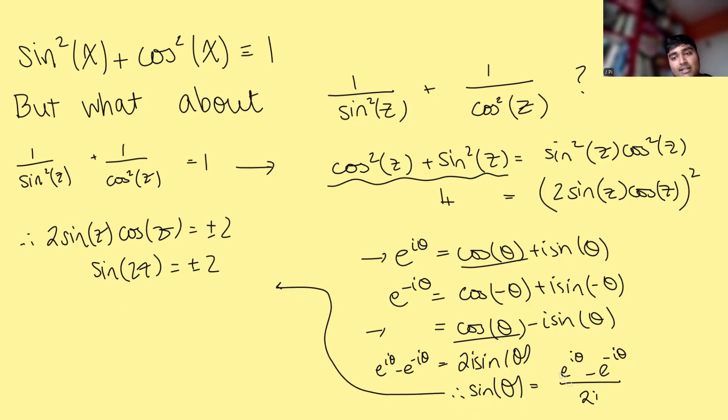So if we replace theta down here with 2iz, this is going to become e to the 2iz minus e to the minus 2iz equals, and if I multiply both sides by 2i, I'm going to get plus or minus 4i. So we're looking at this equation here. How do we solve this?